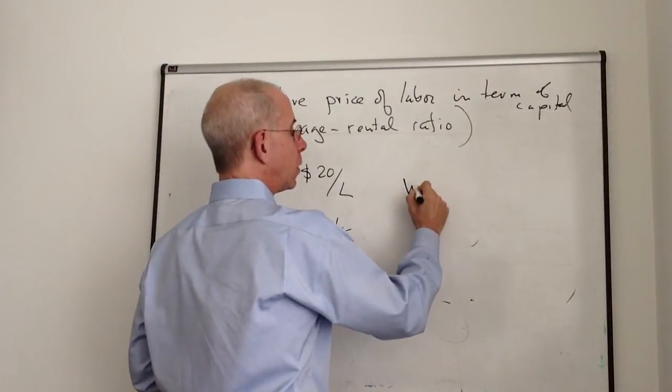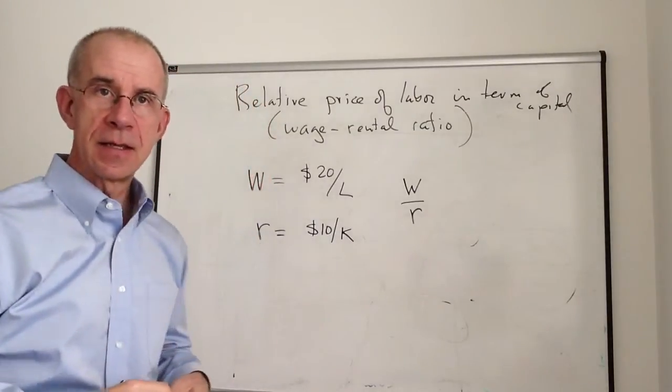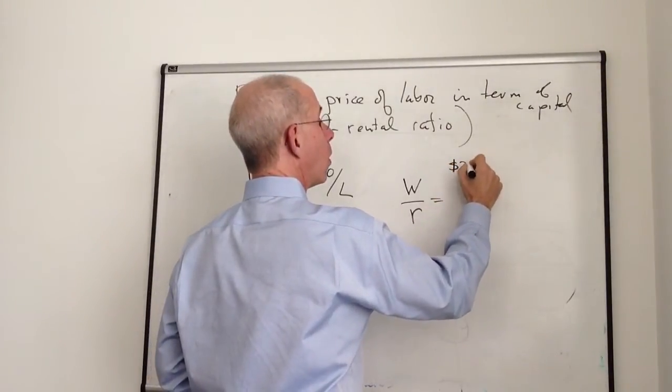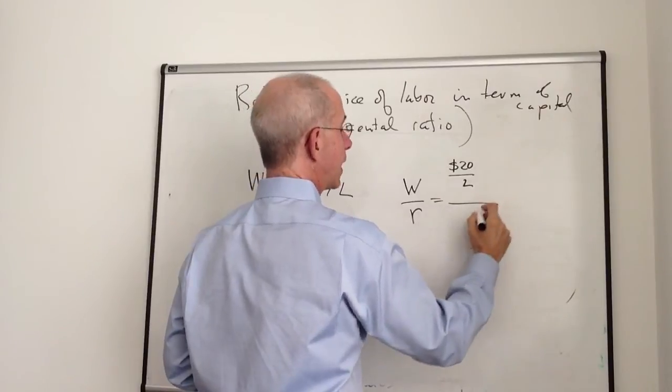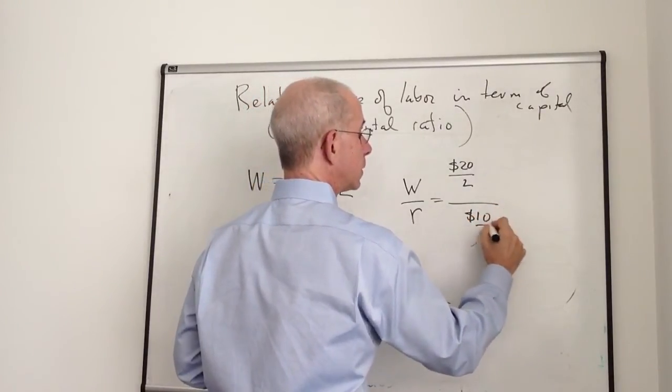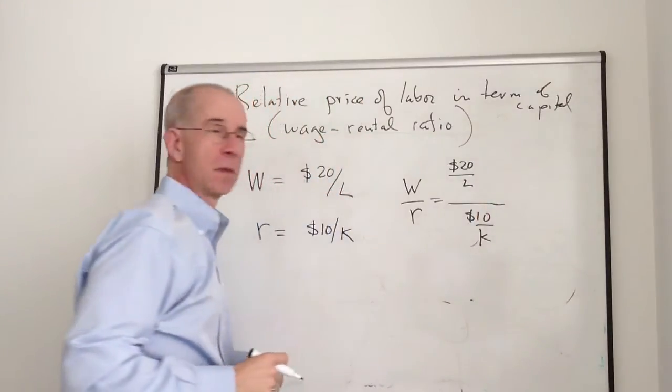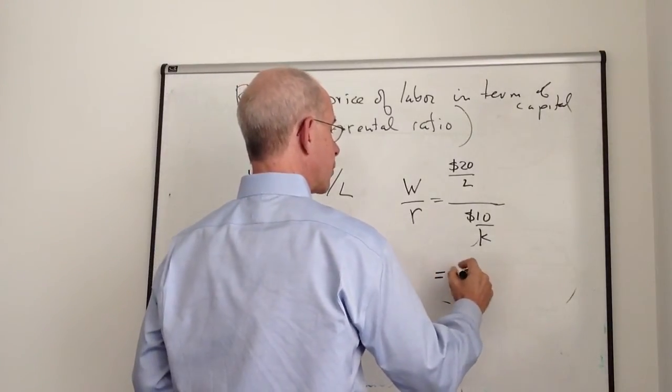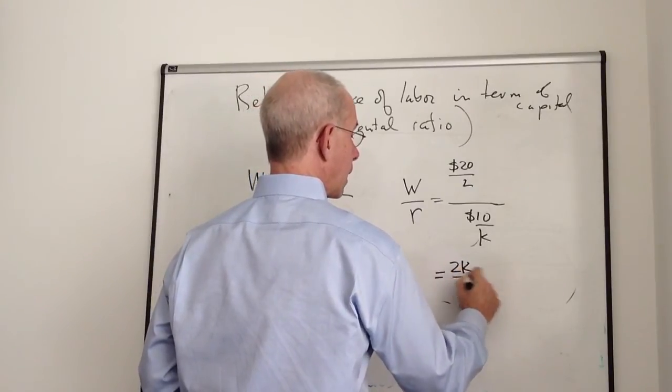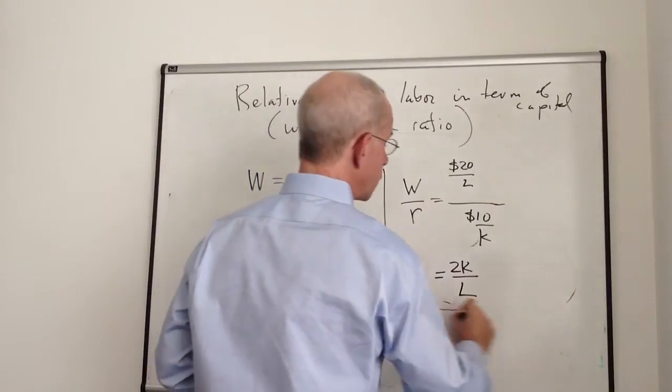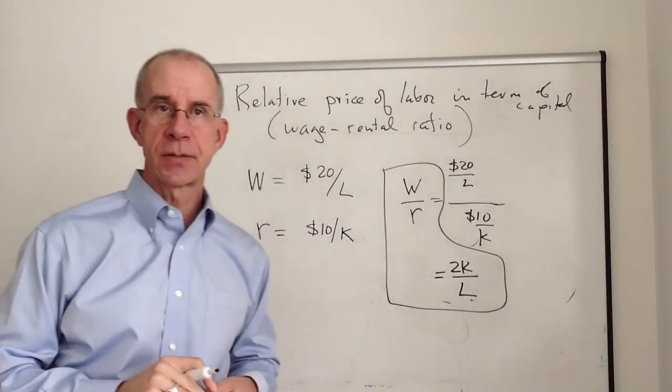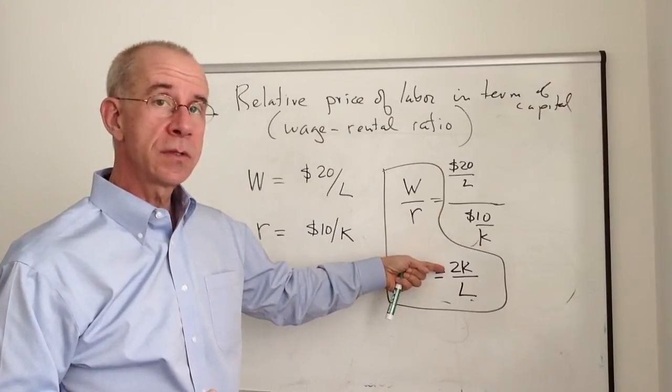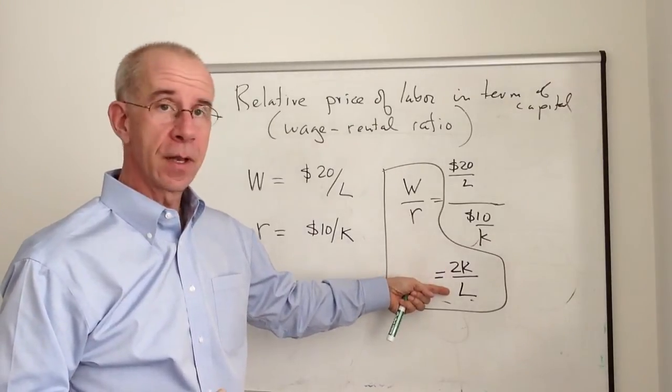We can also look at that as the wage-rental ratio. That is the wage divided by the cost of capital. So we're just simply plugging these two numbers in. And with a bit of algebra, what you will find is that that wage-rental ratio, the relative cost of labor in terms of capital in this example, is two units of capital for every laborer, given these numbers.